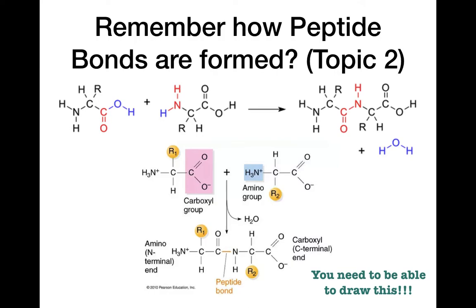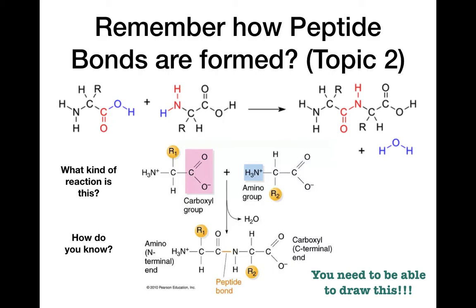Back to topic two — do you remember how peptide bonds are formed? The OH group on one amino acid and the hydrogen on the amino group of the next come together, forming a bond and releasing water. What kind of reaction is this? It's a condensation reaction, because water is formed. And this forms a covalent bond — definitely covalent, since these are all non-metals.